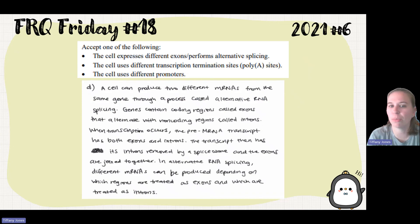So a student says the cell can produce two different mRNAs from the same gene through a process called alternative RNA splicing. Genes contain coding regions called exons that alternate with non-coding regions called introns. When transcription occurs, the pre-mRNA transcript has both exons and introns. The transcript then has its introns removed by a spliceosome and exons are joined together. In alternative RNA splicing, different mRNAs can be produced depending on which regions are treated as exons and which are treated as introns.